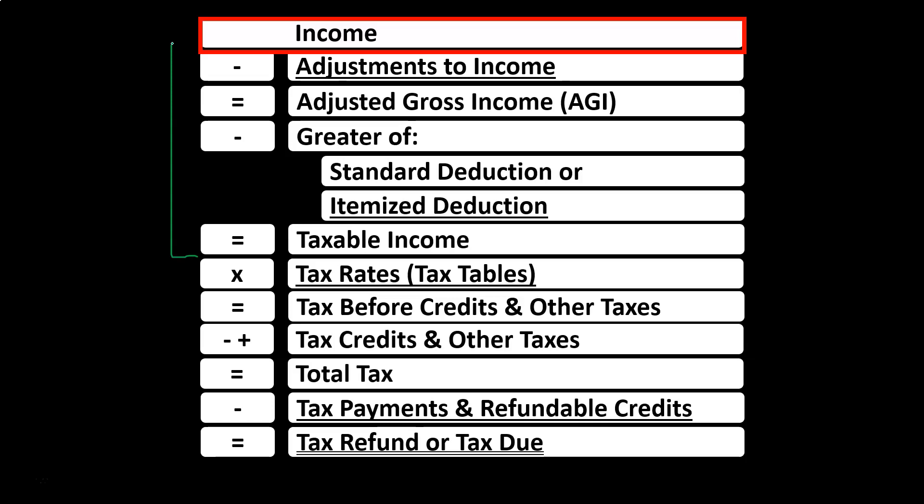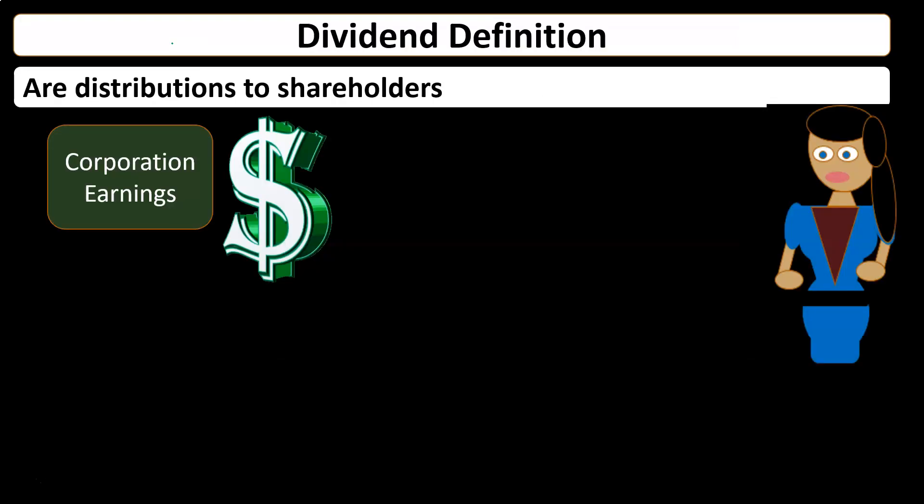The key questions with income are: do we have to include the income in the income line item? If it's lawful not to include it, we would prefer not to. And if it is included, is it going to be taxed at ordinary income rates — the progressive income rates — or will it be taxed at some special, lower rate? Those are the questions we address with regards to dividend income.